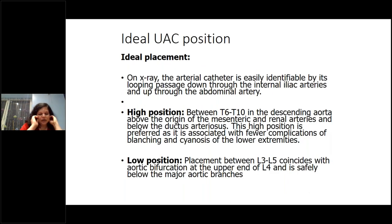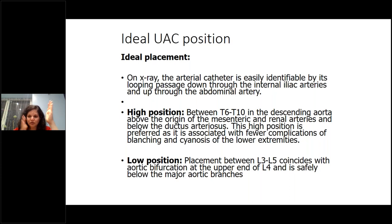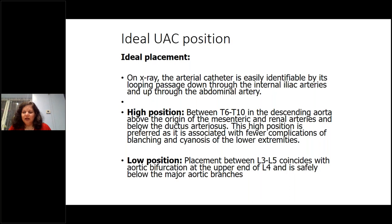Talking about UAC position: on X-ray, a UAC always loops down into the common iliac arteries before going up into the aorta — if it goes straight up, that is not a UAC. Request a chest and abdominal X-ray together — a babygram — because it's very difficult to identify line position from the tip alone. The ideal position is between T6 and T10 in the descending aorta, just above the origin of the mesenteric and renal arteries.